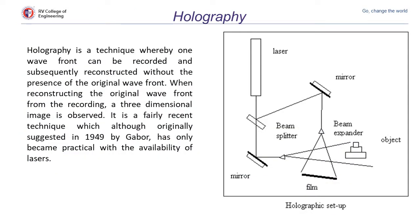The first method is the holographic method. To understand holography, the laser produces a beam and then it is passed through a beam splitter which splits the beam into two parts. The two beams are then passed on to mirrors and by the beam expander they come into contact with each other and produce an object. One wavefront can be recorded and subsequently reconstructed without the presence of the original wavefront, and when they are reconstructed they form a recording.